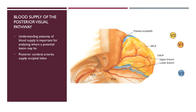Blood supply of the posterior visual pathway is shown in this image. This starts with the vertebral arteries, which fuse to make the basilar artery. The basilar artery then gives off the posterior cerebral artery (PCA), and both the left and right PCA can be seen in this image. Compromise of the vascular supply here will lead to problems in the occipital lobe, which is the primary and secondary visual cortex, as denoted by V1 and V2.